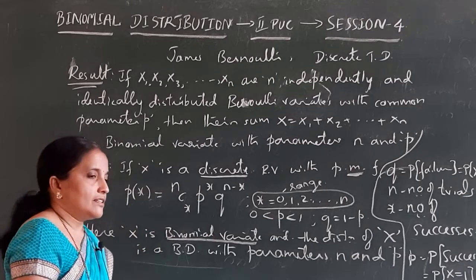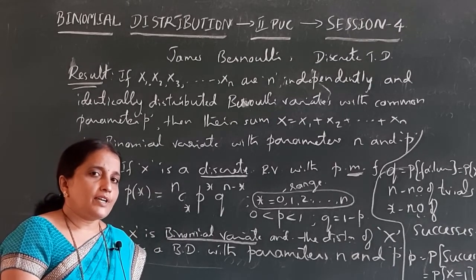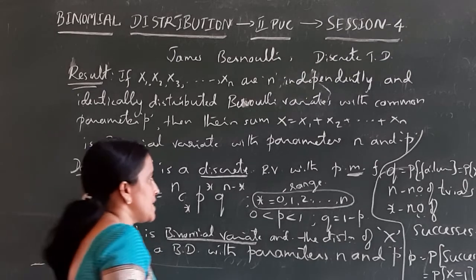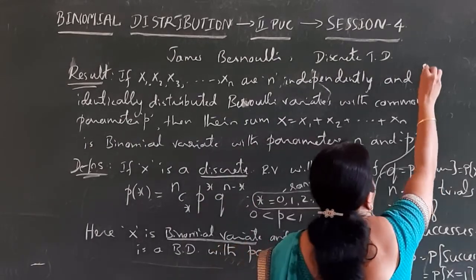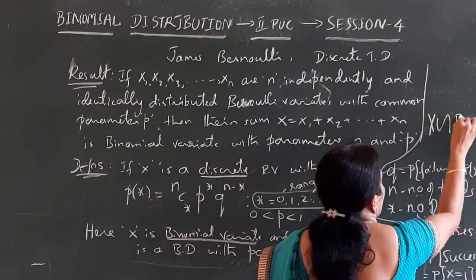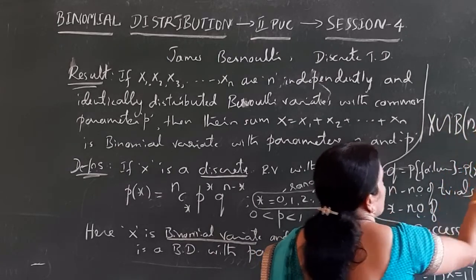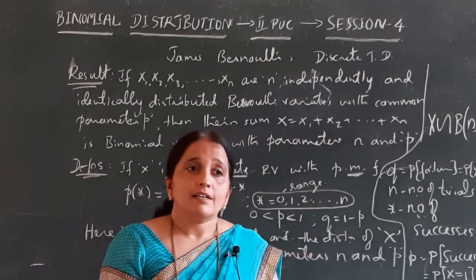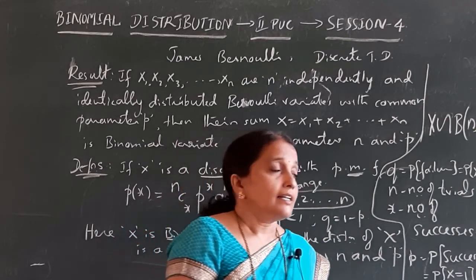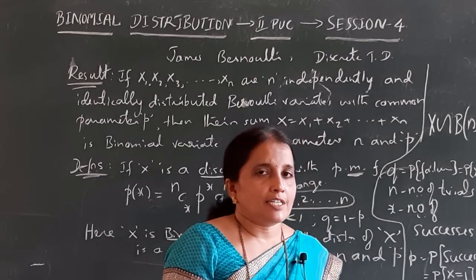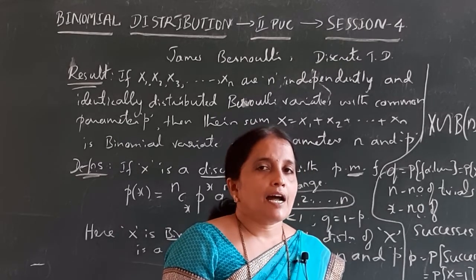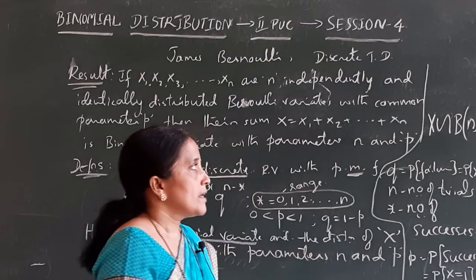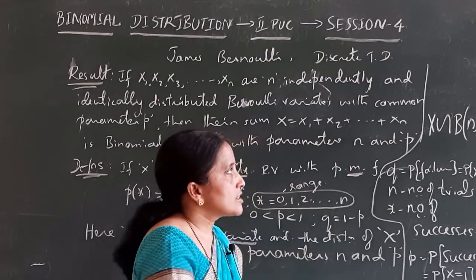If a random variable x follows a binomial distribution with parameters n and p, we write symbolically: x ~ B(n, p). Inside the bracket, always write the parameters. For binomial distribution we write B(n, p), not just B or P alone. Wherever you see B(n, p), it indicates a binomial distribution.